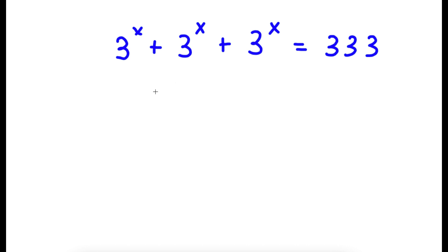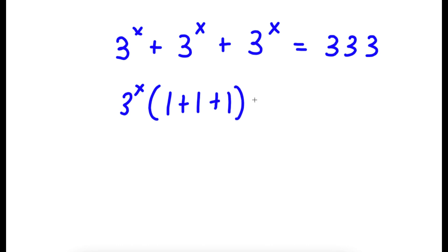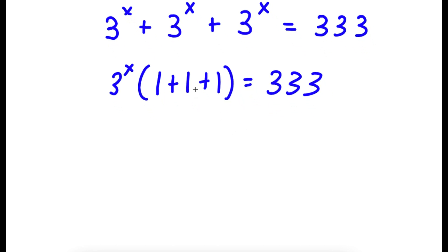To solve this, I'm going to first start by factoring out 3 to the power of x. So 3 to the power of x times 1 plus 1 plus 1 is equal to 333. Now 1 plus 1 plus 1 is simply equal to 3, so now I have 3 to the power of x times 3 is equal to 333.